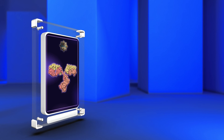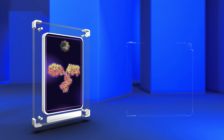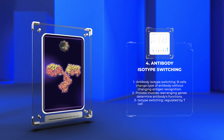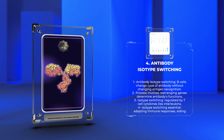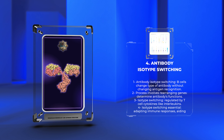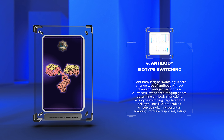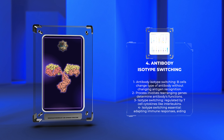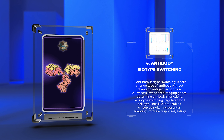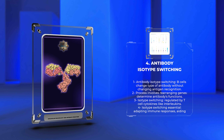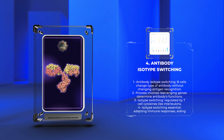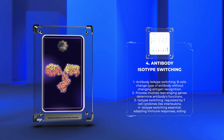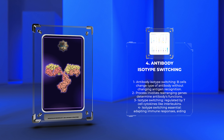In the section on antibody isotype switching, we learn how B cells can change the type of antibody they produce without changing their antigen recognition. This process involves rearranging genes that determine the antibody's functions. Isotype switching is regulated by T-cell cytokines like interleukins, which induce specific gene transcription and guide B cells in producing antibodies with diverse functions.